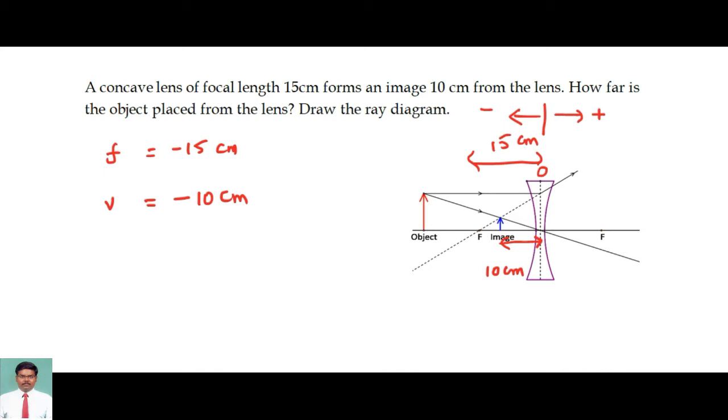So now we are going to calculate the position of the object. I want to calculate the position of the object using the lens formula. We know the lens formula: 1/V - 1/U = 1/F.